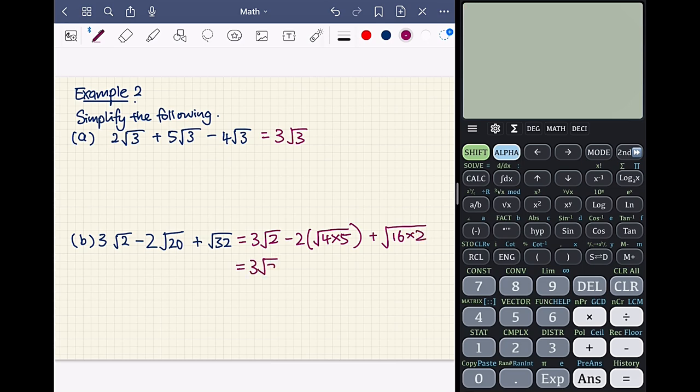So next we have 3 root 2 again, then minus 2 times of root 4 times root 5. Here we apply the first property to break the square root of 4 times 5 into square root 4 times square root 5. Then plus square root of 16 times square root of 2. And next step we have 3 root 2 minus, now 2 times of root 4. We know that root 4 is 2, so 2 times 2, which will give us 4, root 5. And then plus root 16 will give us a 4, so that's actually 4 root 2.